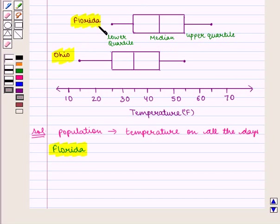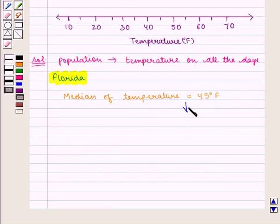Now here for Florida we see that the median of temperature is given by 45 degree Fahrenheit, which means that 50% of average temperature is 45 degree Fahrenheit or above.